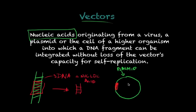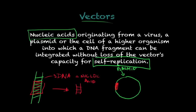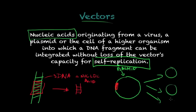The very important part of this definition — and professors may trick you on this — is that vectors are only considered vectors because they are able to self-replicate. Once I introduce my DNA fragment, I need to make copies of it — clones, hence 'DNA cloning.' So my vector needs to self-replicate: this molecule needs to produce more copies of itself, and in doing so, it produces copies of my DNA fragment as well.